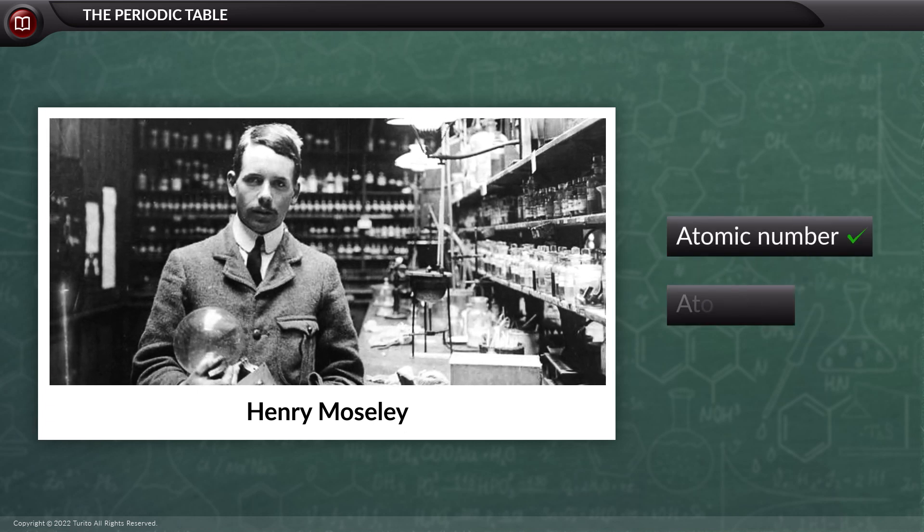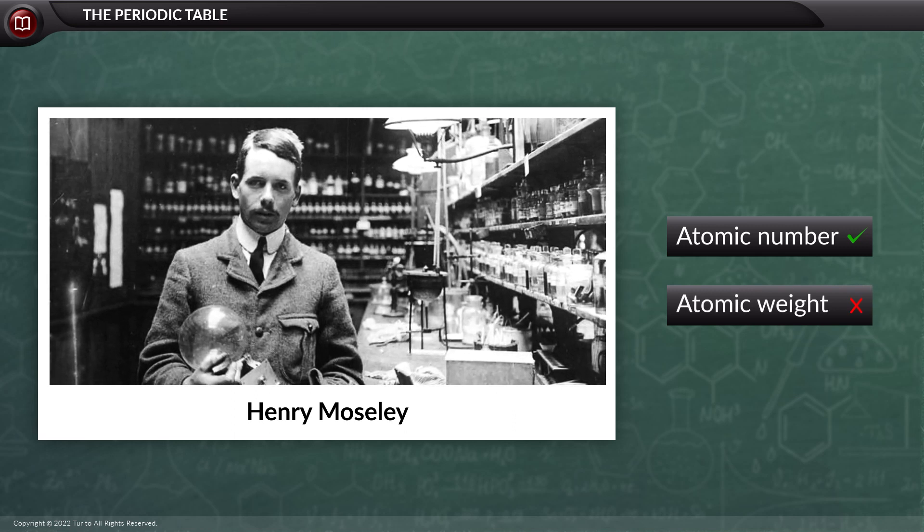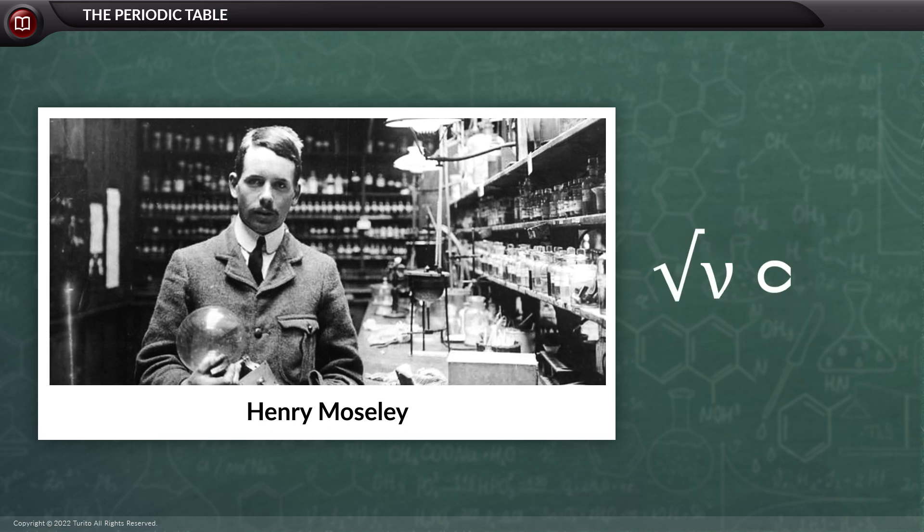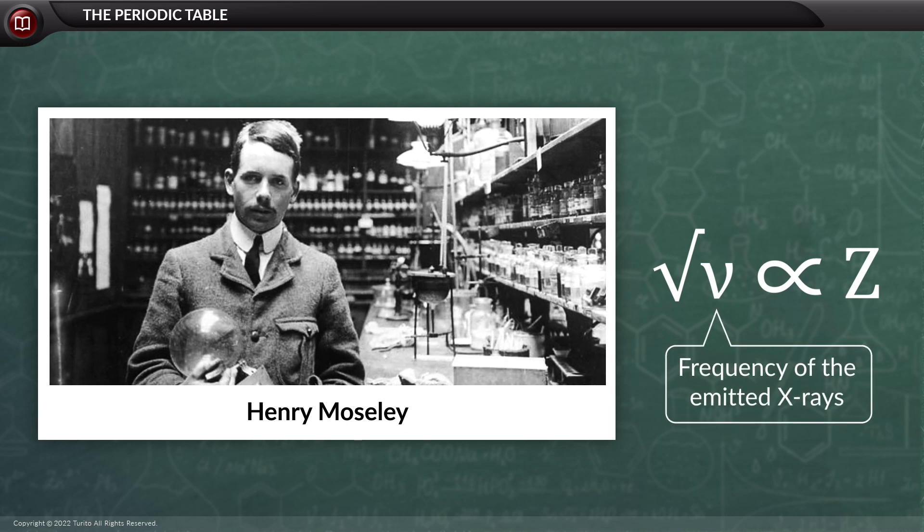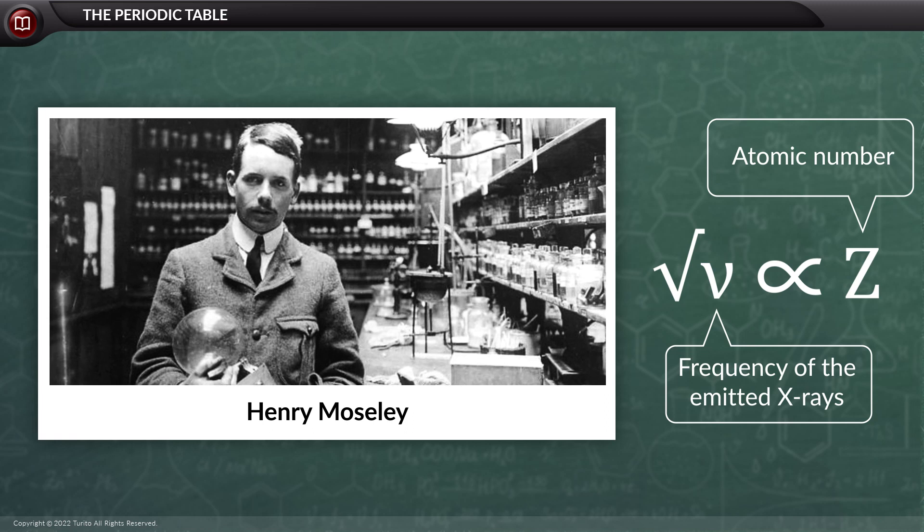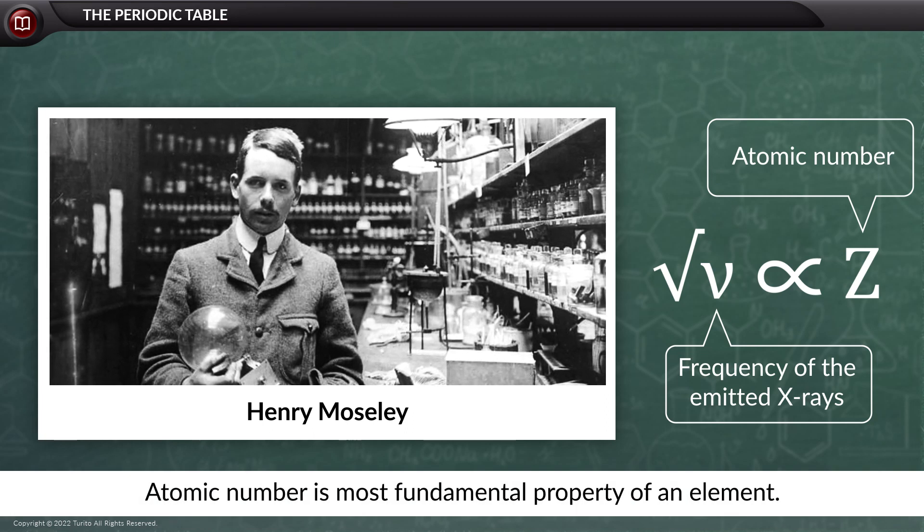It was the atomic number and not the atomic weight with which the frequency of X-rays emitted was related. Thus, the equation that was given was root over nu directly proportional to z, where nu is the frequency of the emitted X-rays, and z is the atomic number. Thus, atomic number and not the atomic weight was the most fundamental property.